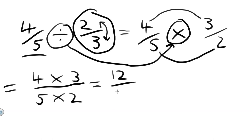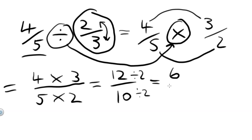4 times 3 equals 12, over 5 times 2 equals 10. We could simplify that further by dividing top and bottom by 2. So whatever we do to the top, we must do to the bottom to keep the fraction the same. So 12 divided by 2 equals 6, and 10 divided by 2 equals 5. And that's our answer, 6 over 5.